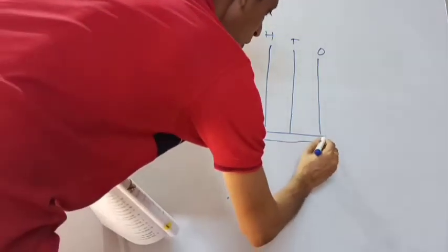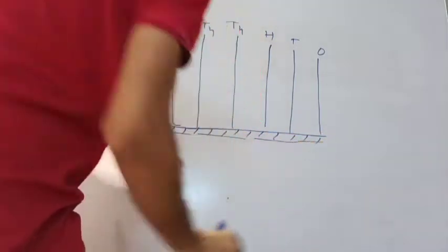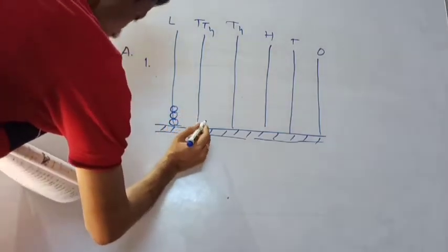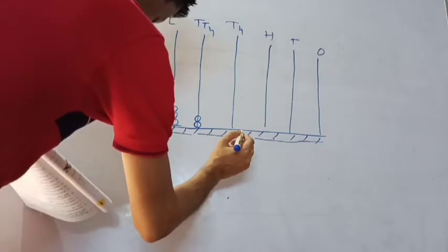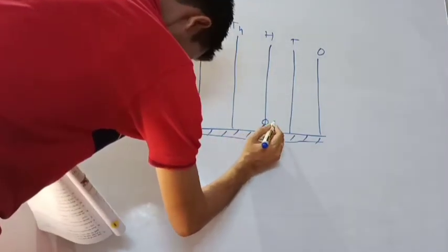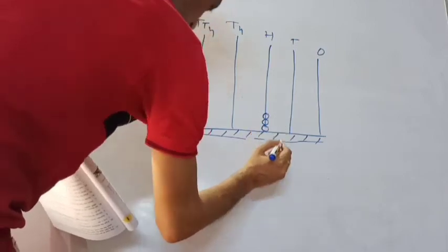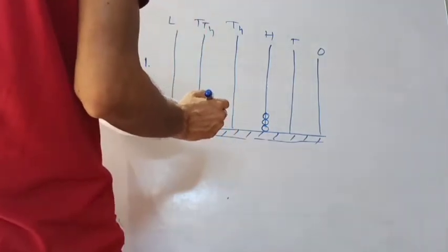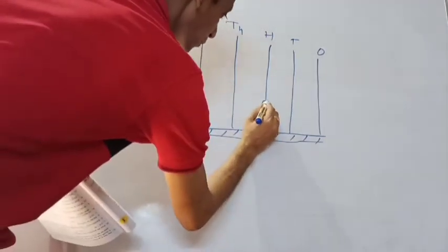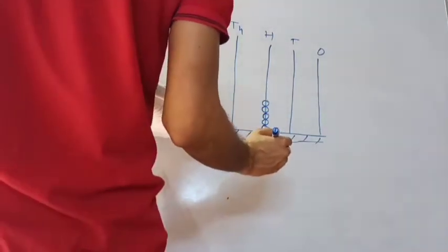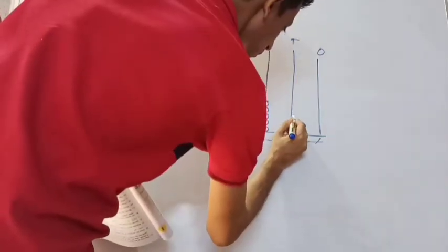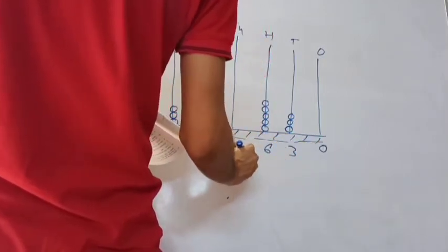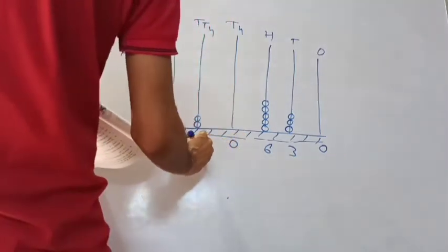On the abacus, count the balls on each stick. Here we have one, two, three — three balls. Here one, two — two balls. Then: three balls, five balls, and three balls. So yes: three balls, four, five balls — five — and here three balls, then six balls, then zero balls, and two balls.